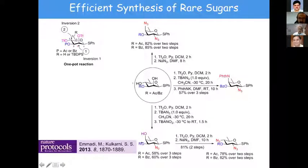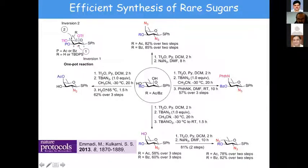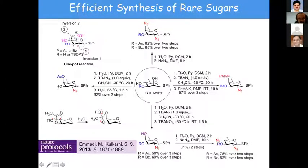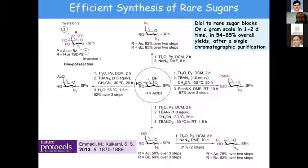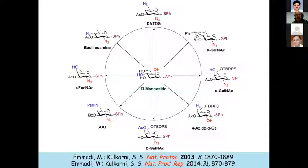For connecting fucosamine at the C3 position we needed the R-configured product, and Madhu found that adding water and heating to 65 degrees gave this particular fucosamine building block, with the reaction proceeding through orthoester opening mediated by water. This protocol was very well received by the international community. Starting from a diol, you can access all the rare sugar building blocks in excellent yield in a one-pot manner, with only one chromatographic purification at the end of the synthesis.